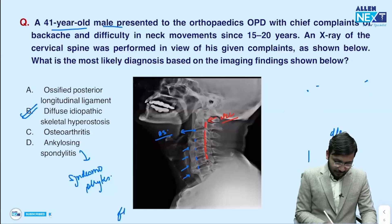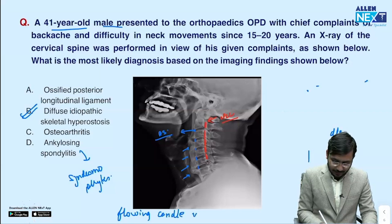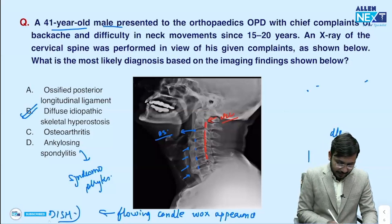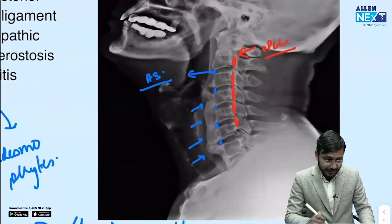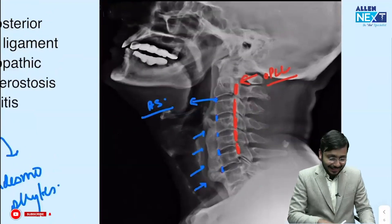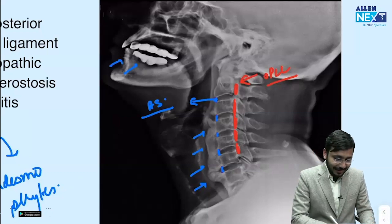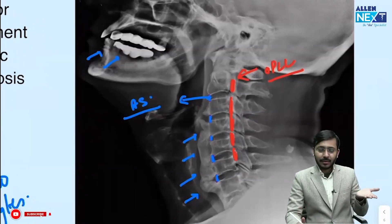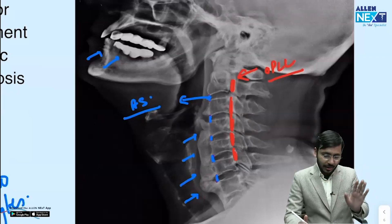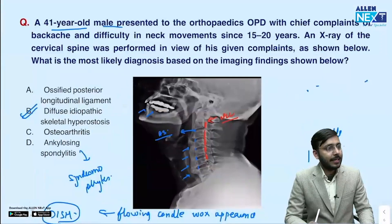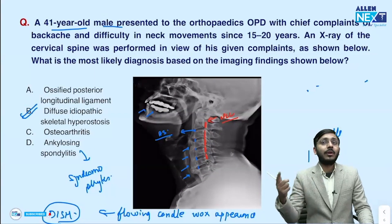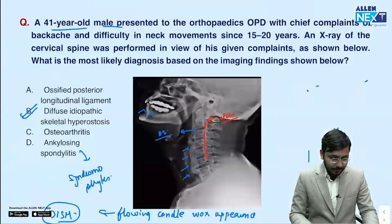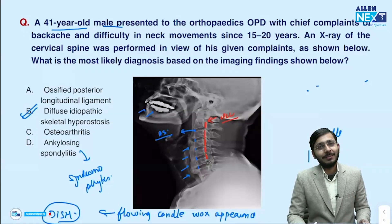To summarize: the flowing candle wax appearance is seen in DISH. The calcifications will appear as bright as bone on X-ray. The ossification of the anterior longitudinal ligament merging across vertebrae is the hallmark of DISH — diffuse idiopathic skeletal hyperostosis, as the word 'hyperostosis' suggests. That's all from today's radiology discussion.